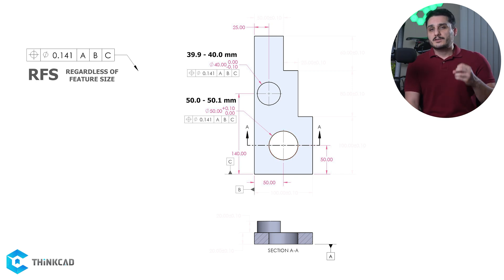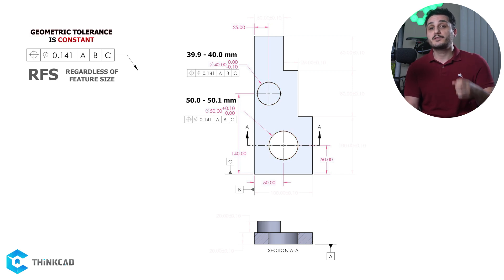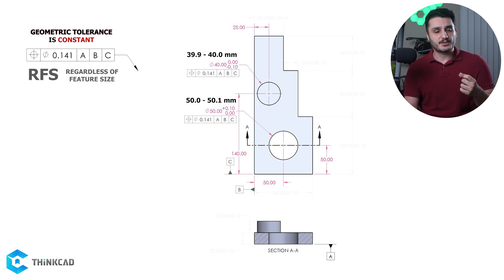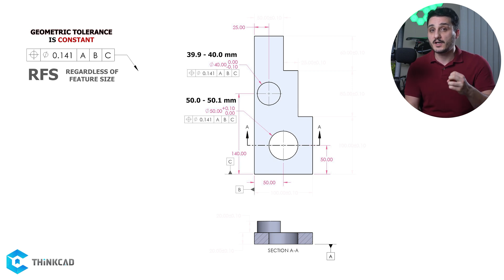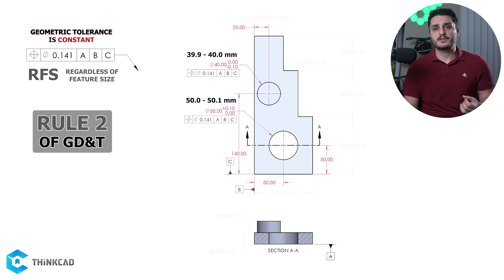What regardless of feature size, or RFS, means is that no matter what size each of these features are, their position tolerance will be the same 0.141 mm. This is the default condition of GD&T whenever there are no material modifiers in our GD&T callout. This is also known as GD&T rule number 2.